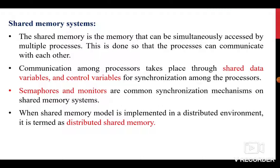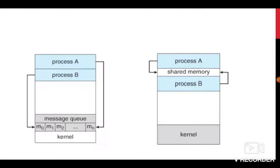In a shared memory system, shared memory is memory that can be simultaneously accessed by multiple processes, allowing those processes to communicate with each other. For example, if a sending process wants to communicate with a receiving process, it may use the shared memory. Communication takes place via shared data variables or shared control variables. To achieve synchronization, we may use semaphores and monitors. If the shared memory model is implemented in a distributed environment, it is called a distributed shared memory model.